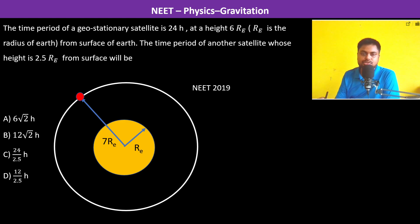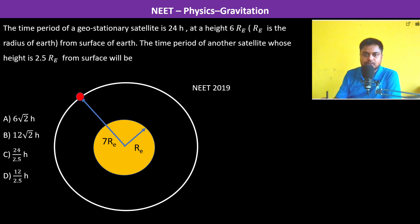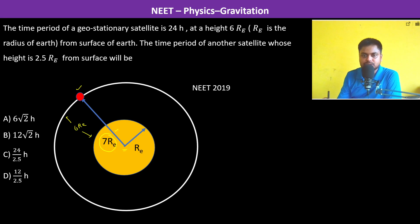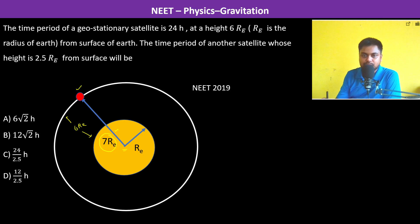The time period of a geostationary satellite is 24 hours at a height of 6Re. The height from the surface is 6Re, so therefore from the center it's going to be 7Re. Let us now find out the formula for the time period.